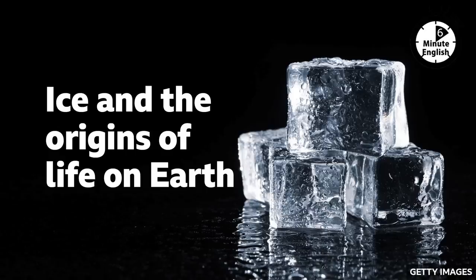Let's recap the vocabulary we've learned from the programme, starting with primordial soup – the environment on Earth before there were any plants or animals which created the conditions for life. The phrase the building blocks of life refers to the most basic biological and chemical units needed to support living plants and animals. A comet is a large object travelling in space which orbits the sun and has a bright, burning tail. Lightning is a flash of bright light produced by electricity moving in the atmosphere. The adjective organic means relating to living plants and animals, and organic food means food which has been grown without using chemicals. And finally, a chain reaction is a series of chemical reactions in which one change causes another, which in turn causes another.